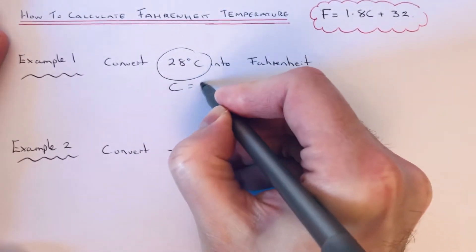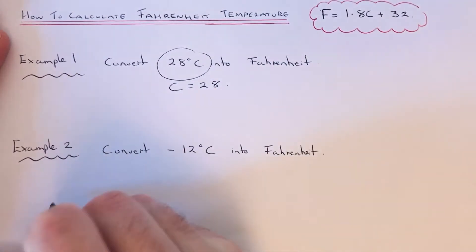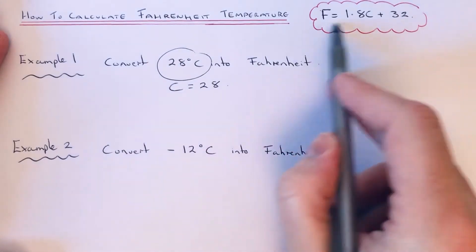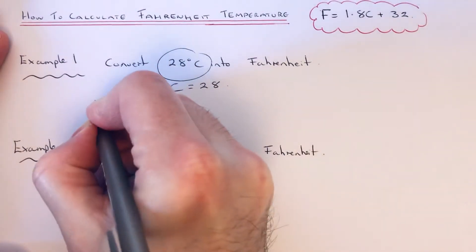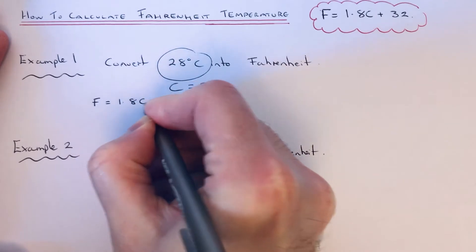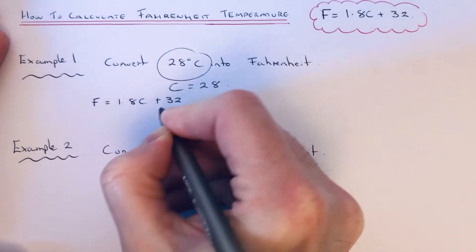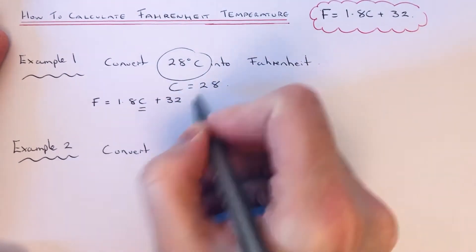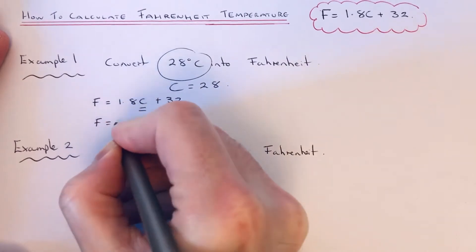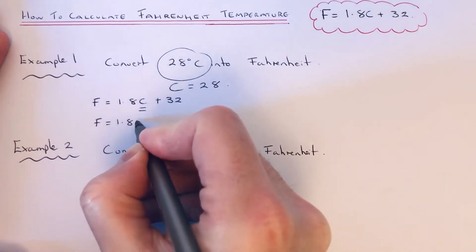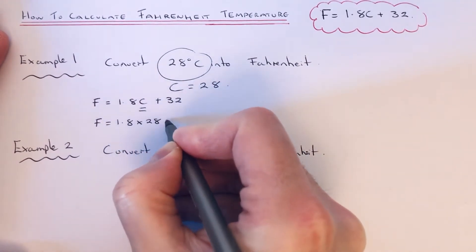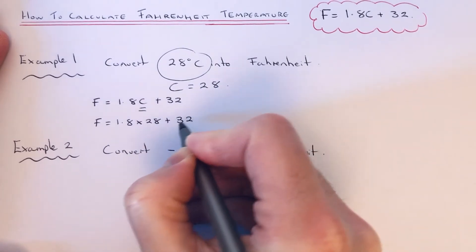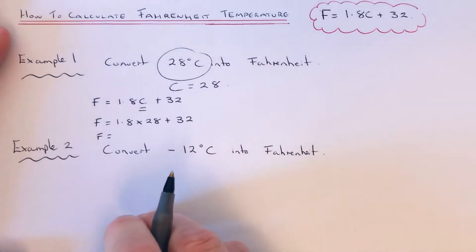We're saying C is equal to 28, so we need to substitute this into the formula above. Let me just copy it out again. So C is 28, so we need to do 1.8 times 28 add 32.